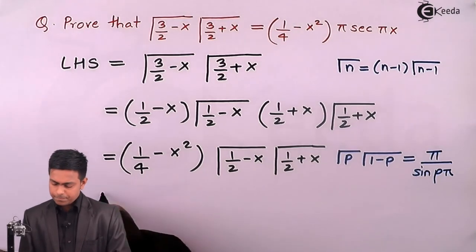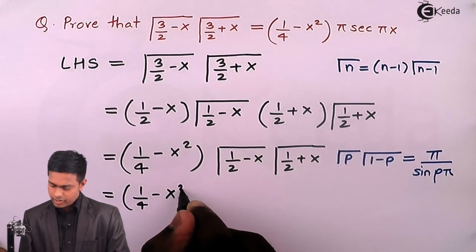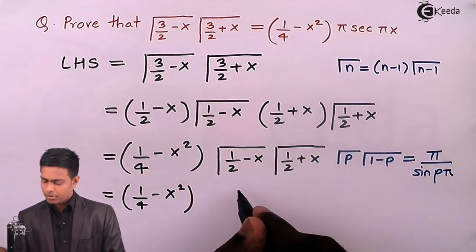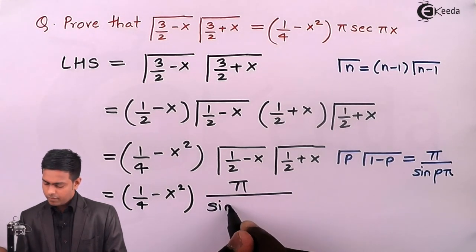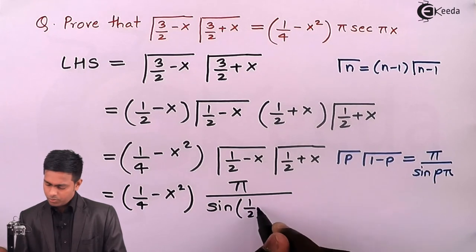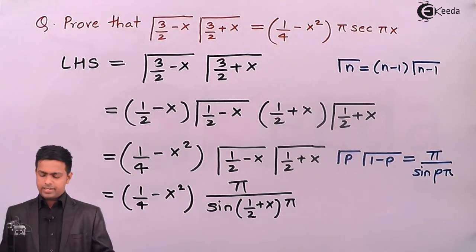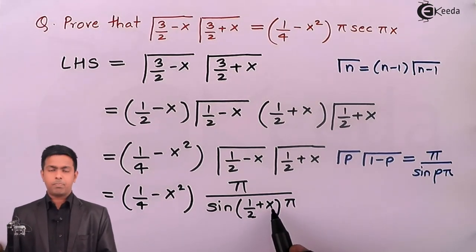So here I will say it equals (1/4 - x²). We have considered p as 1/2 + x, so this will become π/sin((1/2 + x) times π). Let's evaluate this: when π comes inside, that will become π/2 + πx.